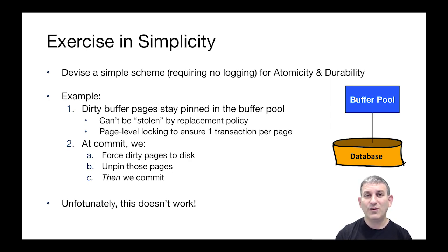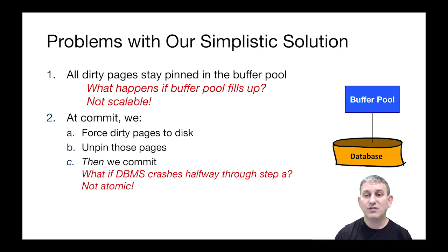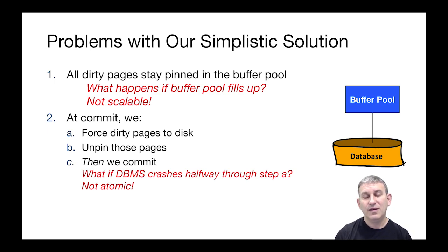Sadly, the scheme doesn't quite work. The first part says all dirty pages stay pinned in the buffer pool — but what happens if the buffer pool fills up? We said in buffer management that we want to unpin pages as fast as possible to give the replacement policy choices. Here, a big transaction could pin all the pages in the buffer pool and still want more, causing a crash. So this is not a scalable solution — it can't handle a transaction that touches more pages than we have in the buffer pool. Even ignoring scalability, it's I/O inefficient.